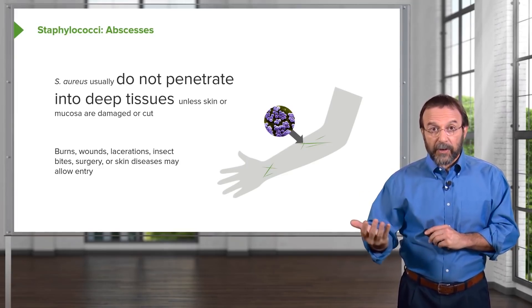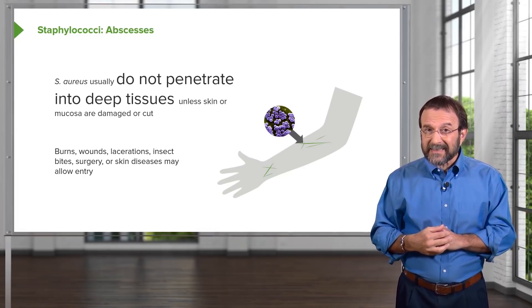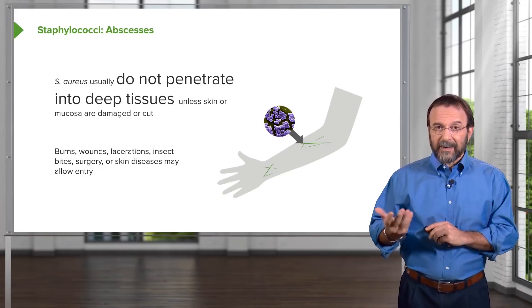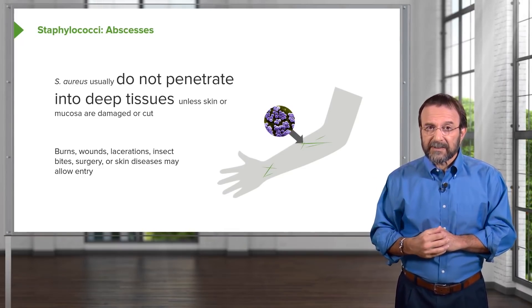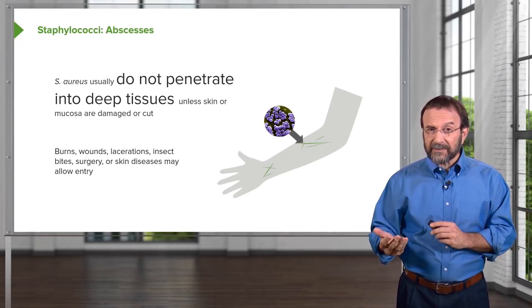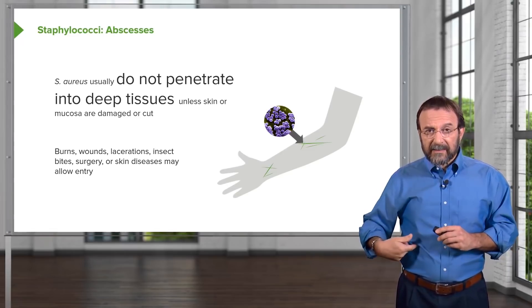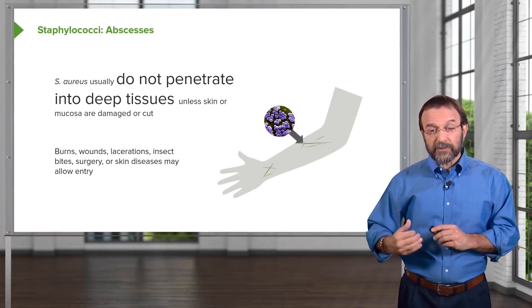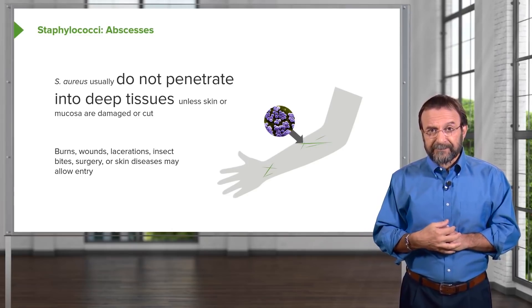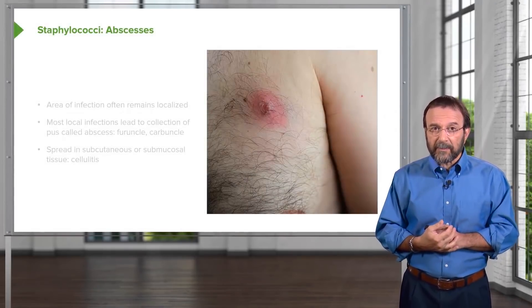Problems arise when damage occurs. Things like burns, wounds, lacerations, an insect bite, surgery, and a variety of skin diseases can all let Staph aureus come in. When you have surgery, one of the first things done is to extensively wash the skin with a preparation to sterilize the area. If that's not done properly, Staph aureus will be introduced into the wound, causing serious infections.